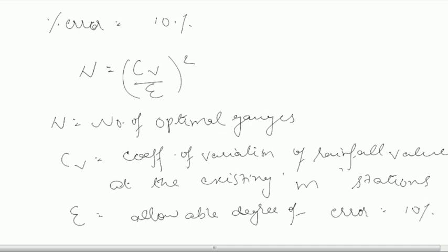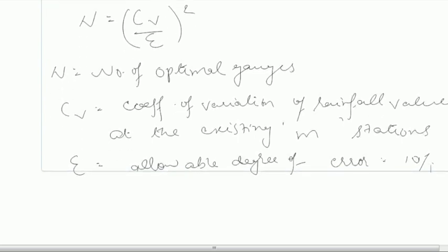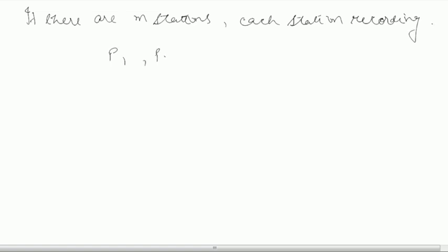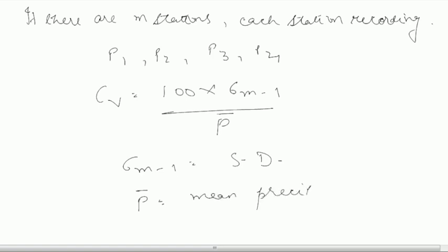Here we have set this to 10%. So let's say if there are M stations installed and each station recording its rainfall respectively, let's say P1, P2, P3, P4 like this at various stations. Then your CV will be given by 100 into sigma M-1 upon P bar. Here sigma M-1 is equal to standard deviation and P bar equal to your mean precipitation.